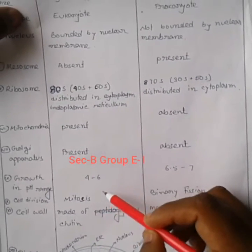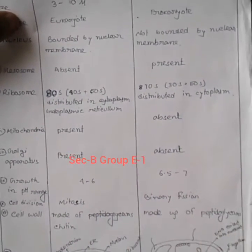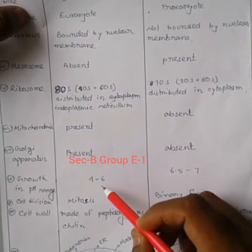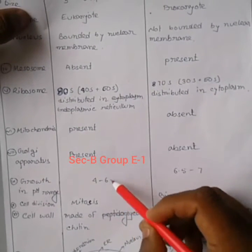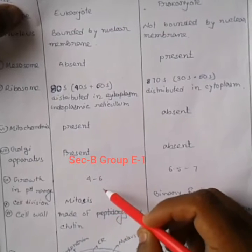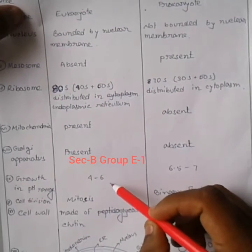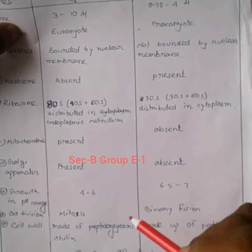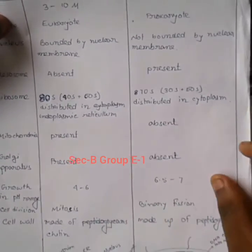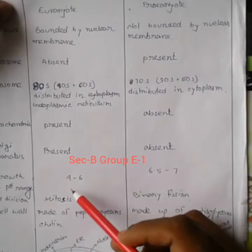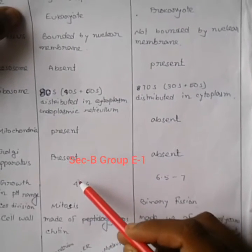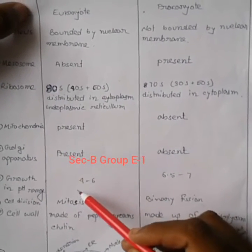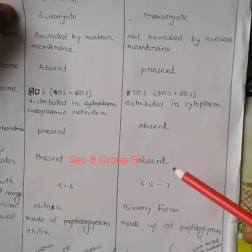In some areas of our body, such as underarms, some fungal growth is observed in the pH range of 4 to 6. That is why antifungal creams, powders, and similar products are used to prevent fungal growth. This pH range helps to maintain fungal growth, while at pH 6.5 to 7, bacterial growth is observed.